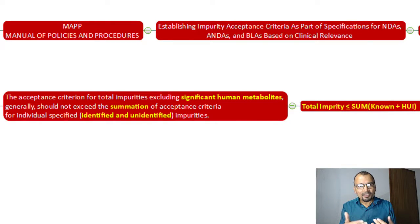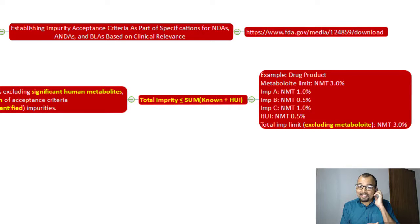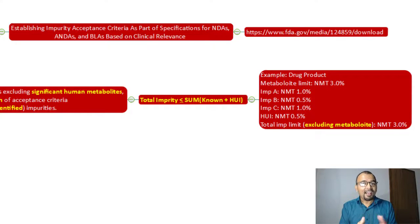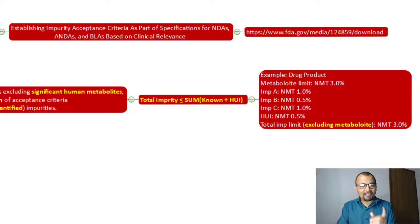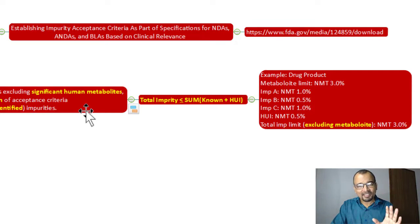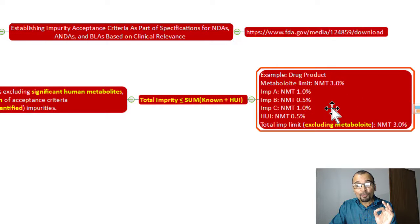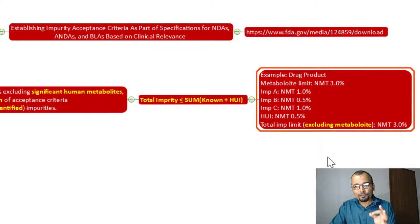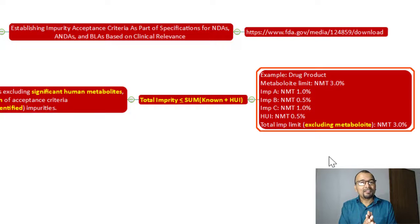The Highest Unknown Impurity (HUI) is not more than 0.5%. The total limit is decided based on the summation of all known impurities and the highest unknown impurity, excluding the human metabolite. As the guidance states, the significant human metabolite can be excluded from the total impurity acceptance criteria. So, not counting the 3% metabolite, counting impurities A, B, C, and HUI gives a total impurity limit of not more than 3%.